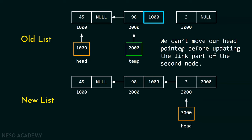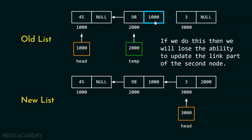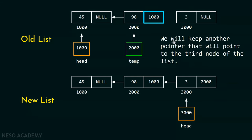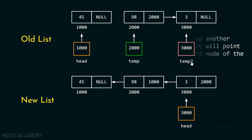We can't move the head pointer before updating the second node's link, because then we'd lose the ability to update it. And we can't move head after updating, because we've lost the reference to the third node. The solution is to keep a second pointer, temp2, pointing to the third node of the list.